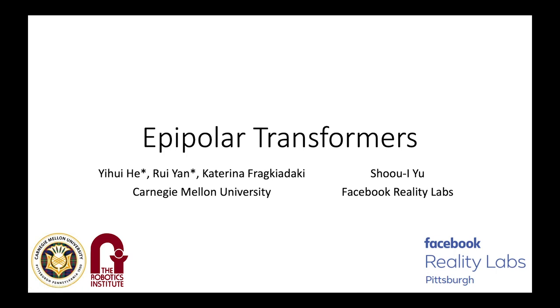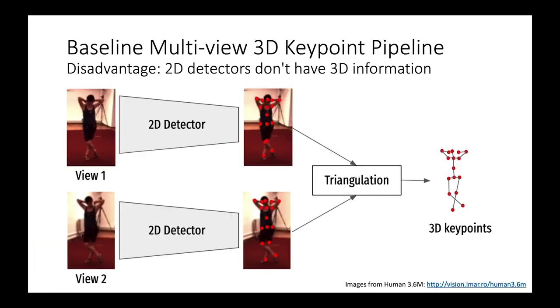We present epipolar transformers for improving multi-view 3D keypoint detection. The baseline multi-view 3D keypoint detection pipeline first does 2D detection on each view, followed by triangulation to get 3D keypoints.